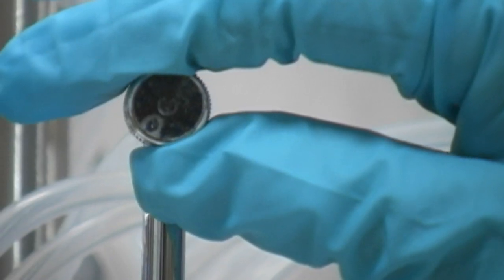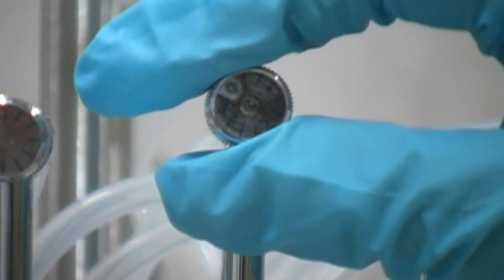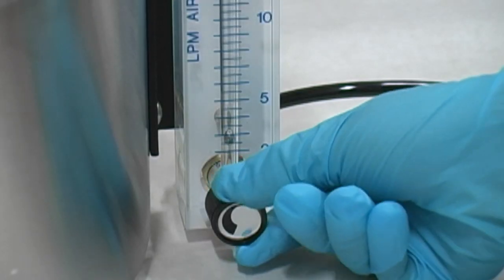Raise all valve tubes to their highest position. Turn all needle valves on the valve tube assembly off by rotating clockwise. Close the valve on the flow meter by rotating clockwise.